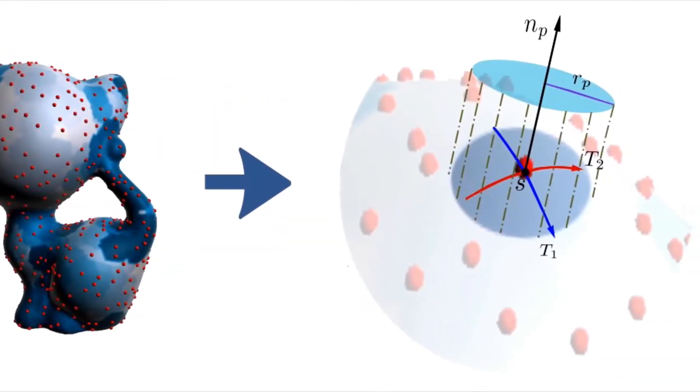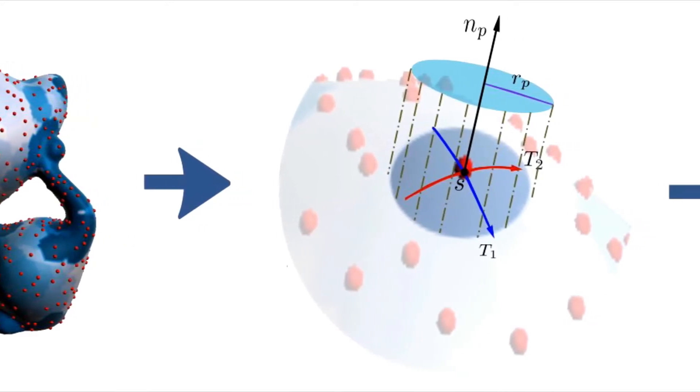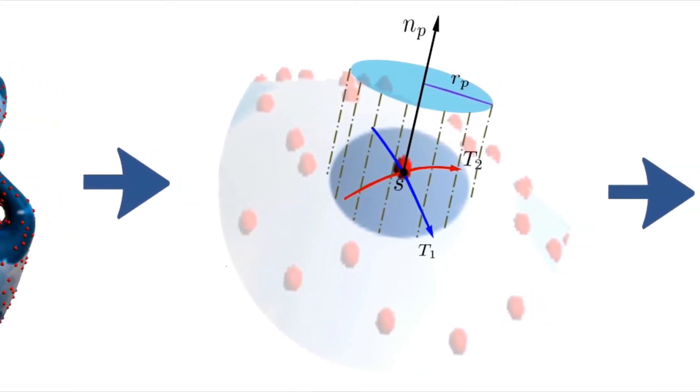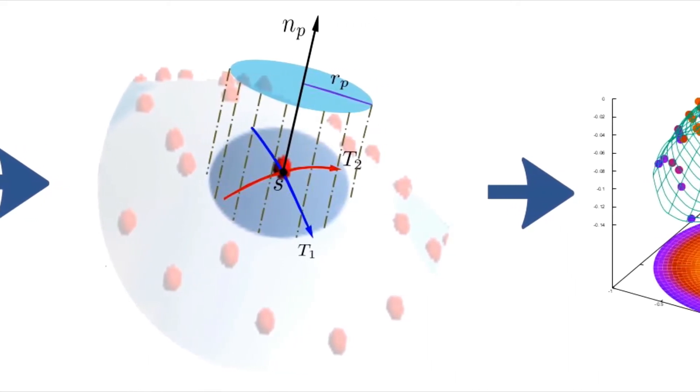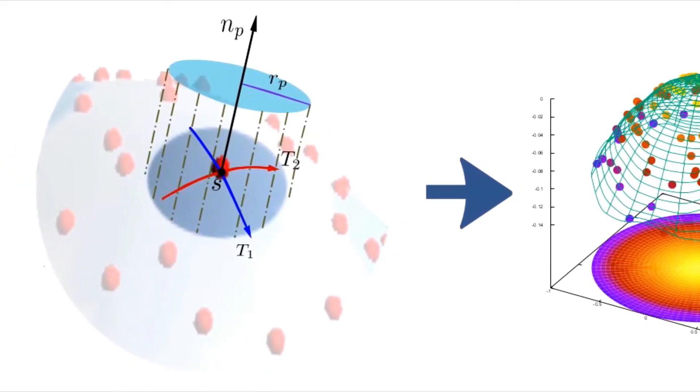Second, we transform each patch into a canonical coordinate system using principal curvatures. And finally, we express them as a sparse combination of continuous functions.